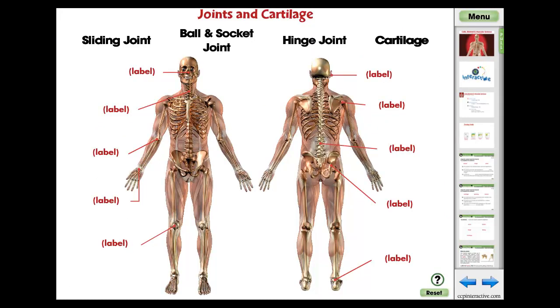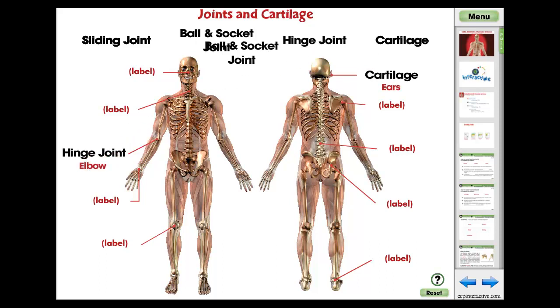The joints and cartilage activity is an engaging app to support the comprehension of the content in the reading passage. Students label the joints and cartilage on the human body by dragging the words from the list to their correct position.